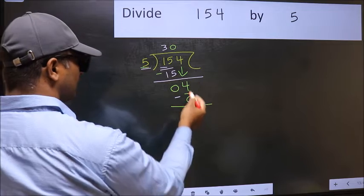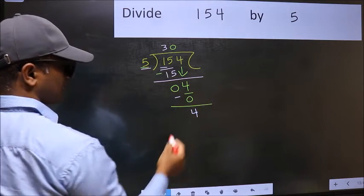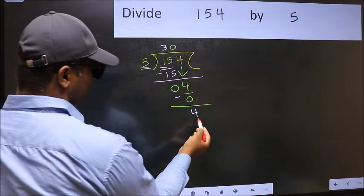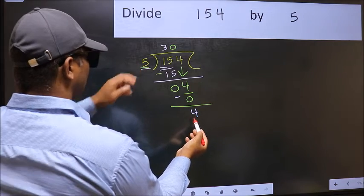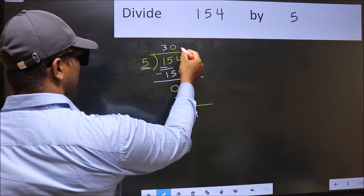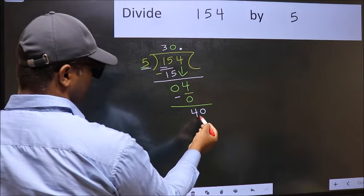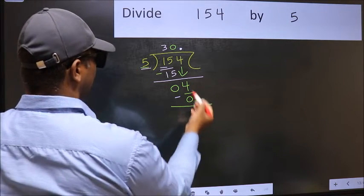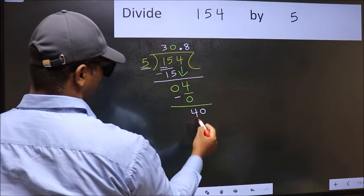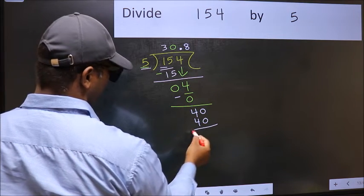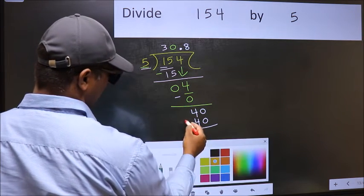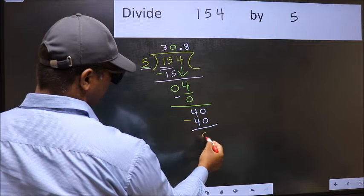So over here, we did not bring any number down, and 4 is smaller than 5. So now you can put dot and take 0, so 40. When do we get 40 in the 5 table? 5 eights are 40. Now you should subtract. 40 minus 40 is 0.